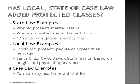State laws can add to but cannot take away from federal laws. Examples of expanded protections: Virginia protects marital status; Wisconsin protects sexual orientation; 17 states ban gender identity bias. Local law examples: Cincinnati protects people of Appalachian heritage; Santa Cruz, California outlaws discrimination based on height and physical appearance. In case law, former drug use has been ruled not to be a disability. These things have emerged through court decisions and ultimately led to laws protecting these groups.